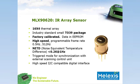The Melexis MLX90620 Infrared Array Sensor consists of a 16 pixel by 4 pixel thermal array. It's in an industry standard small TO39 package. It comes factory calibrated with all the calibration data stored on board in EEPROM memory. It has a high-speed programmable frame rate variable from 1.5 Hz to 512 Hz. It has a triggered mode for synchronization with external scanning control units, and it also has a high-speed I2C compatible digital interface.